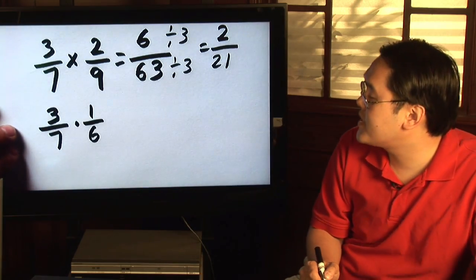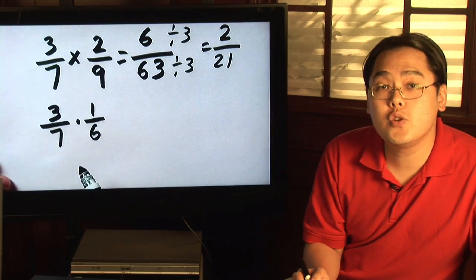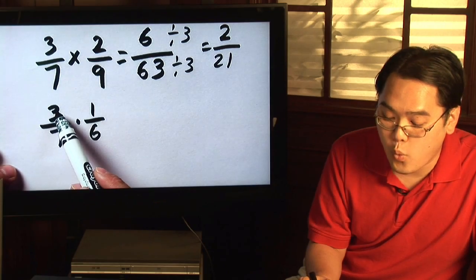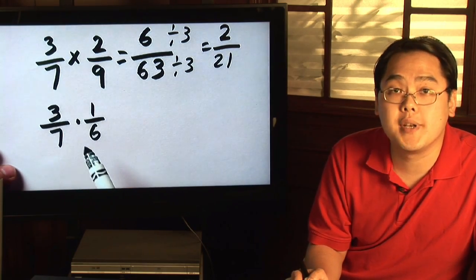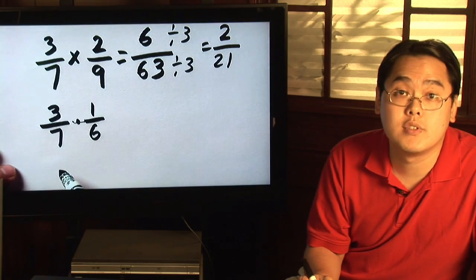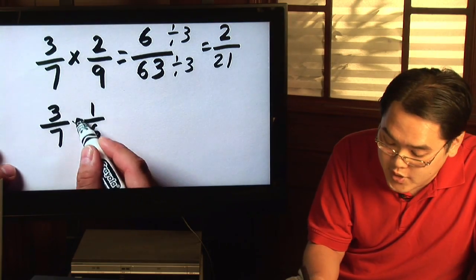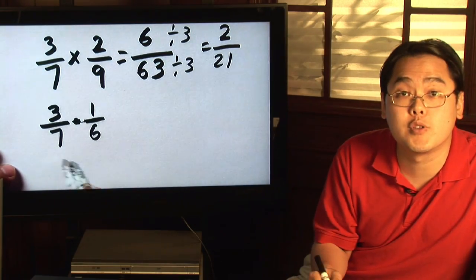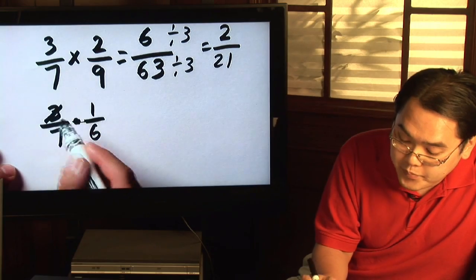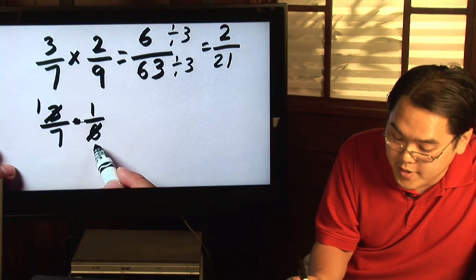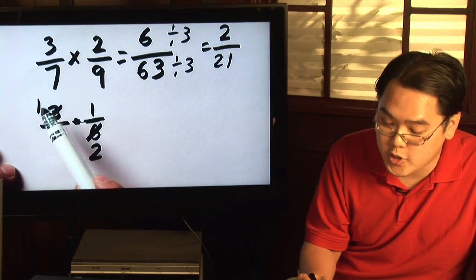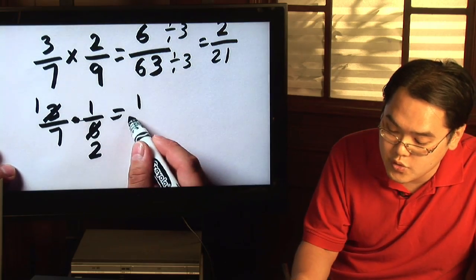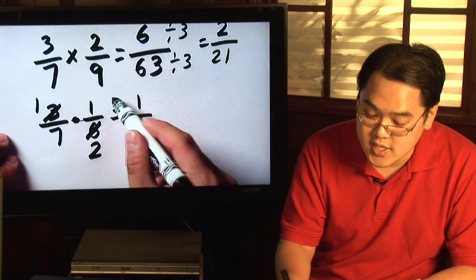Suppose you're multiplying 3 sevenths by 1 sixth. You can do what's called cross cancellation. If one numerator can be reduced with one of the denominators, either or, you can cancel out and make the problem a little bit simpler. For example, notice the 3 and the 6 — they can both be divided by 3. We're going to reduce both numbers by 3 right now. 3 divided by 3 is 1, and 6 divided by 3 is 2. So what you're really doing is multiplying 1 times 1, which is 1, and 7 times 2, which is 14, and no reduction is necessary.